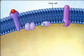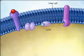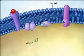The G protein subunit which dissociates from the others carries a GDP, which is replaced by GTP when the subunit is activated.